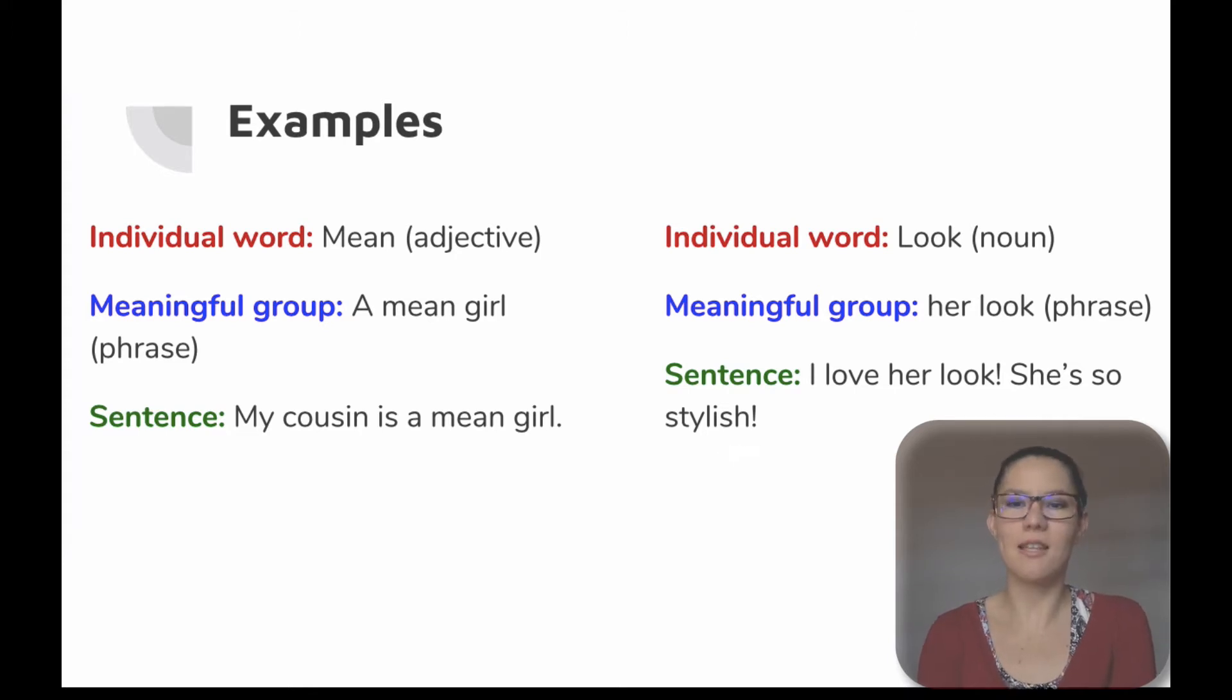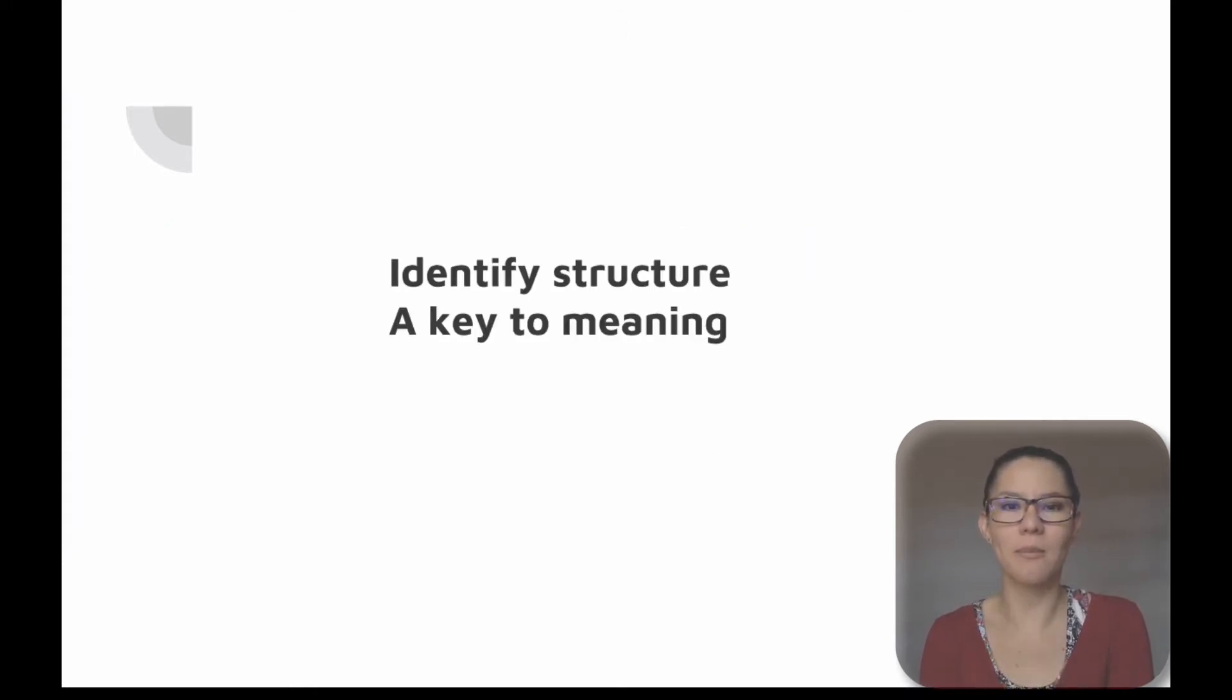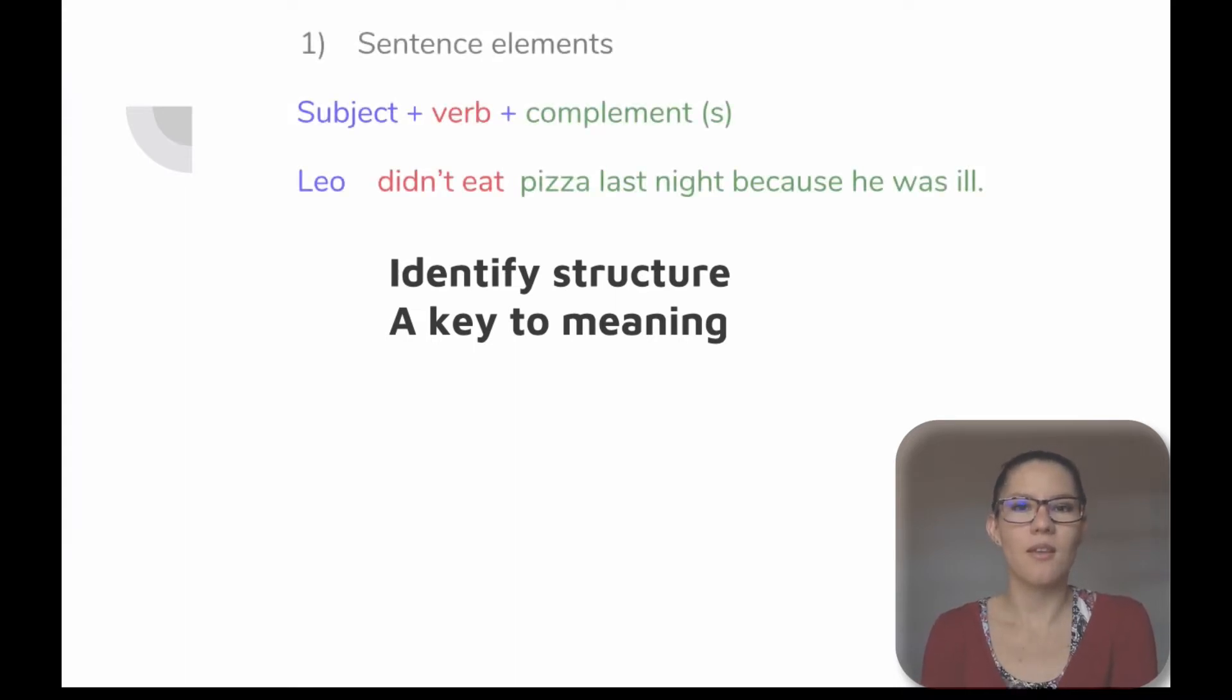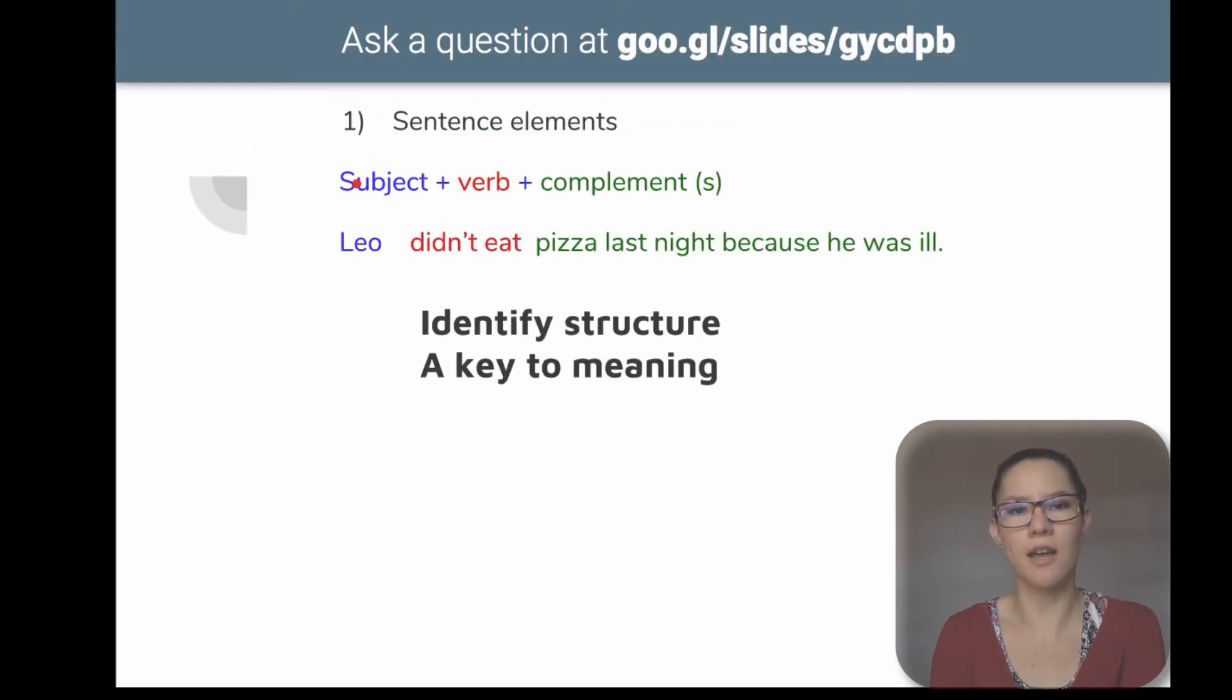Alright, let's see some elements that will help us identify structure as a key to meaning and to understand English better. First, it's really important to understand sentence elements and where we can locate every part of speech in a sentence. So first we will typically find the subject followed by a verb and a complement or several, like in this example I'm giving you.